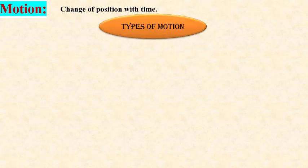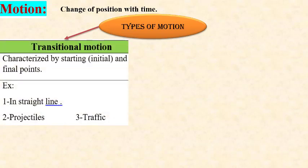There are two types of motion. The first type is translational motion. Translational motion is motion which is characterized by having a starting or initial point and a final point, like motion in a straight line, projectiles, and traffic.